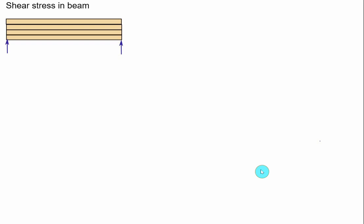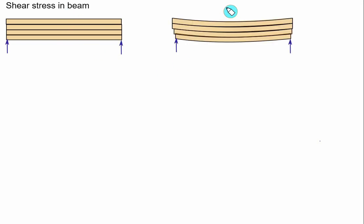Shear has been defined as a tendency of two adjacent portions of a body to slide on each other. We will get the best idea of horizontal shear from a simple illustration. Consider several thin boards placed on two supports. When the boards are the same length, the ends will be practically straight and even. If we apply a downward transverse load equal to F at the center,